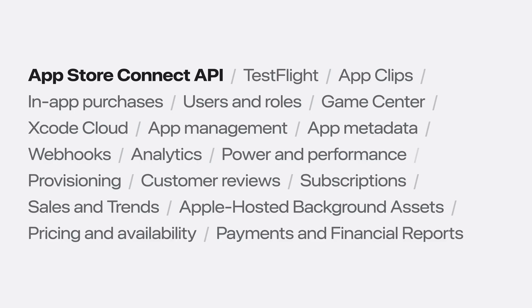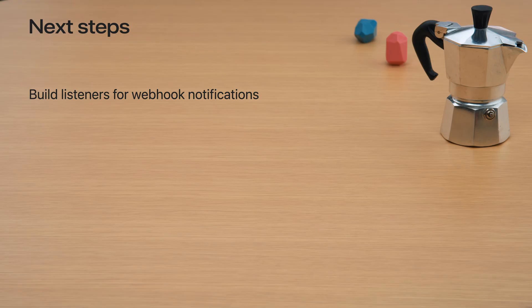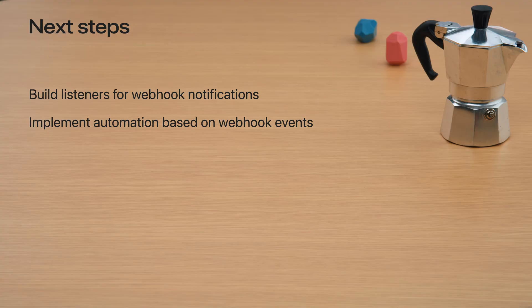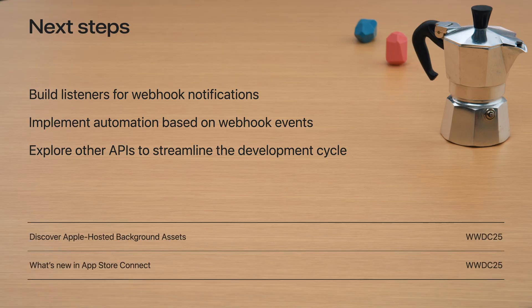Automating your daily tasks is important because it allows you to focus more on better user experience. To wrap up today's session, here are some recommendations: First, build Webhook listeners so that you can receive Webhook notifications from App Store Connect. Next, implement reactive behaviors based on Webhook events to automate your processes. Finally, explore what else the App Store Connect API offers and use these APIs in your automation for an even faster development cycle. Don't forget to check 'Discover Apple-hosted Background Assets' and 'What's New in App Store Connect' sessions for more information. Thanks for watching.